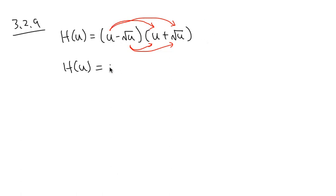Anyways, u times u is equal to u squared. u times square root of u, let me just write this, plus u square root of u. And the second part, we have negative square root of u times u, which is minus u square root of u. And the last part, negative square root of u times positive square root of u, we have minus.